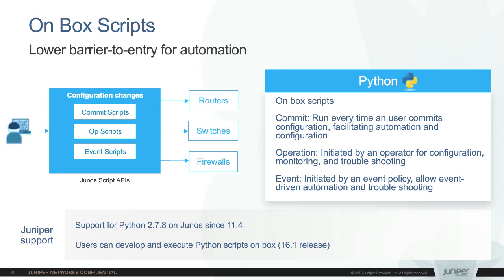We also have operation scripts and event scripts. Op scripts are generally done on demand — you log into the router and can create an op script that performs multiple different actions and combines those results into a single output. The classic example is for troubleshooting. If a customer has a VPLS circuit or maybe an L3 VPN, there can be multiple components involved. You could combine troubleshooting steps of looking at the VPLS instance, interface counters, and possibly firewall issues all in one step — so you can instruct junior engineers or NOC staff to run a single command that looks in all the logical places where you can potentially have a problem, really reducing the burden on your operations staff.